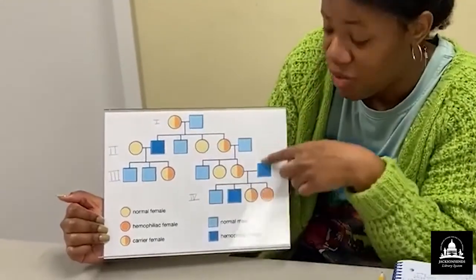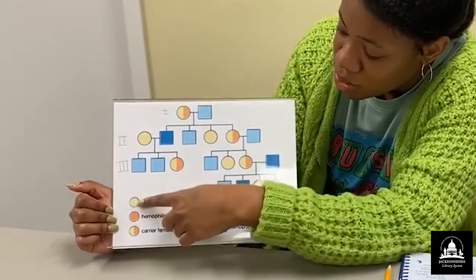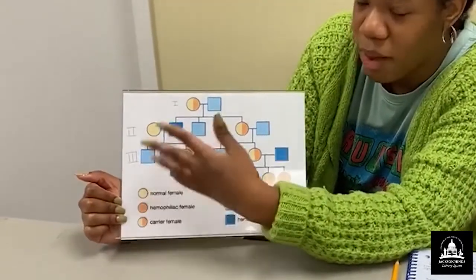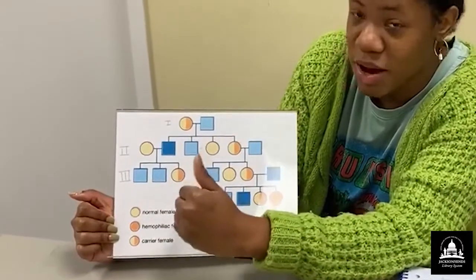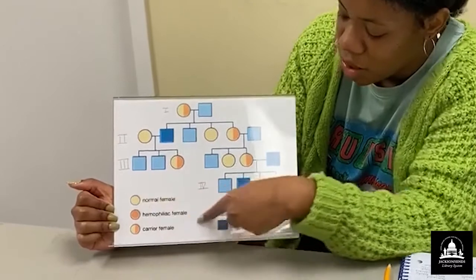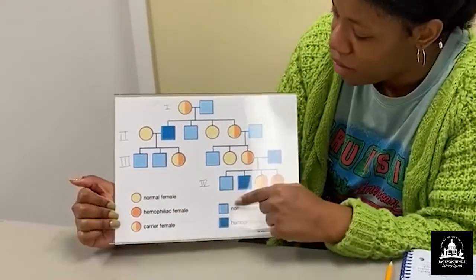And this is showing a family. Okay. So the circle will represent a female. We won't worry about normal or carrier females right now. But just know that circles represent females and squares represent males.